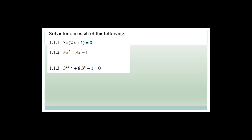Let's start with the first question. A lot of you might be tempted — it says solve for x — to multiply this out and then factorize it again, which is silly, because what they've really done is they've already factorized it for you. What you need to realize is that it can be broken up into 3x equals 0, or 2x plus 1 equals 0. Therefore x equals 0, or x is equal to negative 1.5. Those are our options.